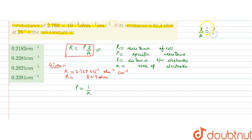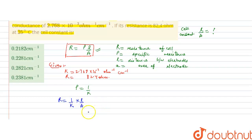The formula becomes R = (1/k) × (l/a). Rearranging to find the cell constant l/a, we get l/a = R × k, that is resistance multiplied by specific conductance. So it will be 82.4 ohm × 2.768 × 10⁻³ ohm⁻¹ cm⁻¹.